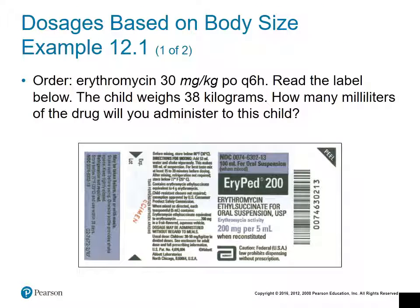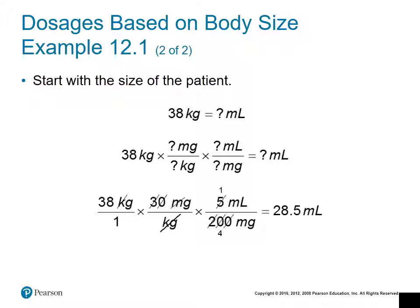This is a dosage based on body size. The order is 30 milligrams per kilogram every six hours, and the child weighs 38 kilograms. Reading the label, once reconstituted this medication has a strength of 200 milligrams per 5 milliliters. The question is: how many milliliters will you administer? We start with the size of the patient and work toward getting the milliliters to administer.